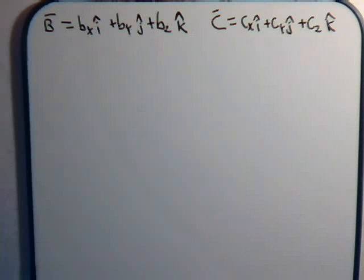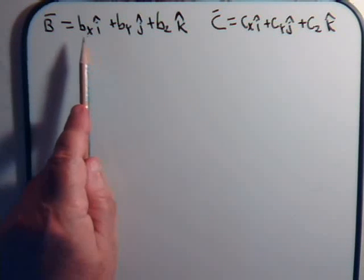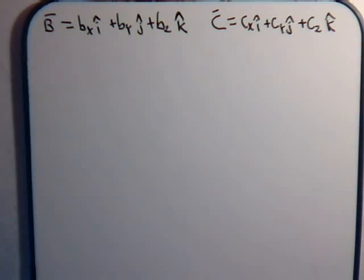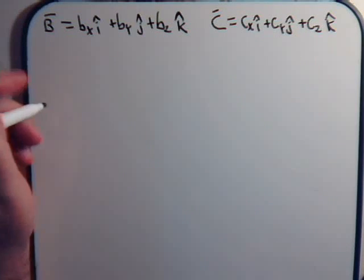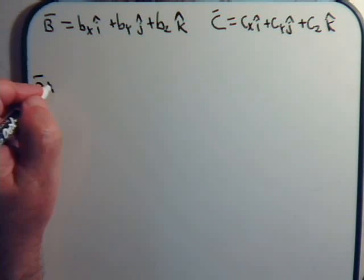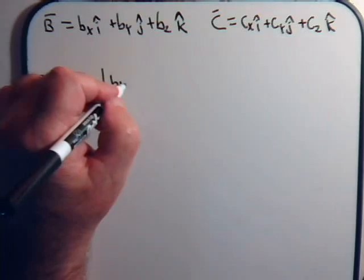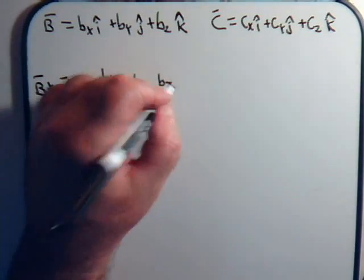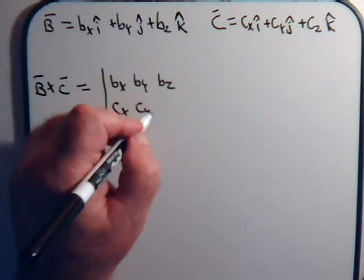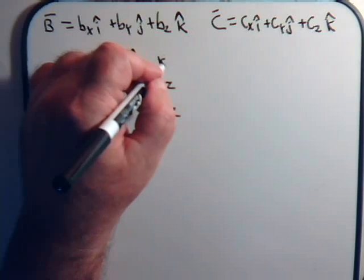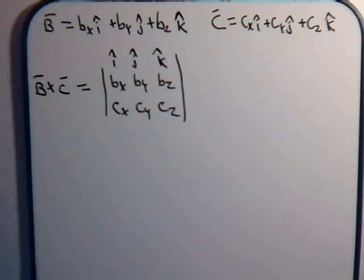Remember how the cross product is defined in matrix terms. If we have a vector B and a vector C with their respective components, and we take the cross product B cross C, we get a matrix written out in determinant form. That is the matrix definition of the cross product of two vectors.